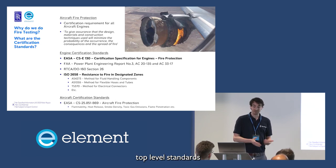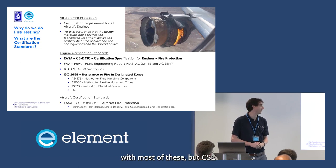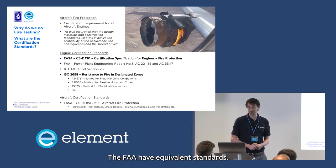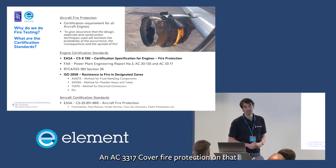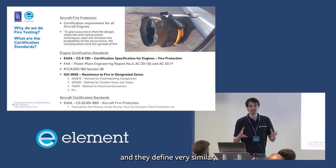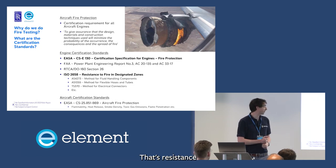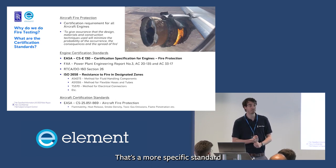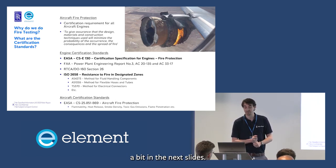So what are the top-level standards? From EASA, the certification specification for engines: CS-E 130 covers fire protection. The FAA has equivalent standards — Power Plant Engineering Report Number 3, AC 20-135, and AC 33.17, which cover fire protection. RTCA DO-160 also has a section on fire. These are all the main top-level standards, and they define very similar requirements for what you need to do to have a safe engine with respect to fire.